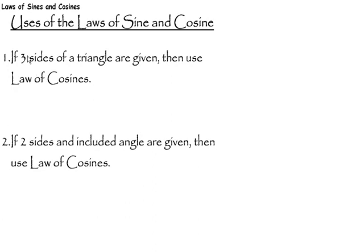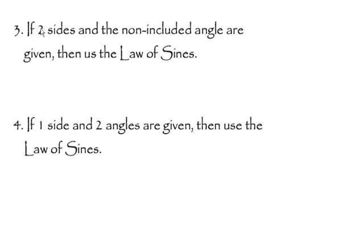If you are given three sides of a triangle, then you are going to use the law of cosines. If you are given two sides and the included angle, then you are also going to use the law of cosines. If you are given two sides and a non-included angle, then you're going to use the law of sines. And if you are given one side and any two angles, then you are going to use the law of sines.